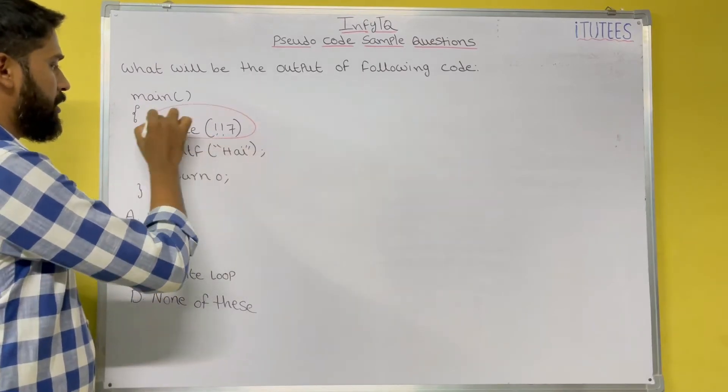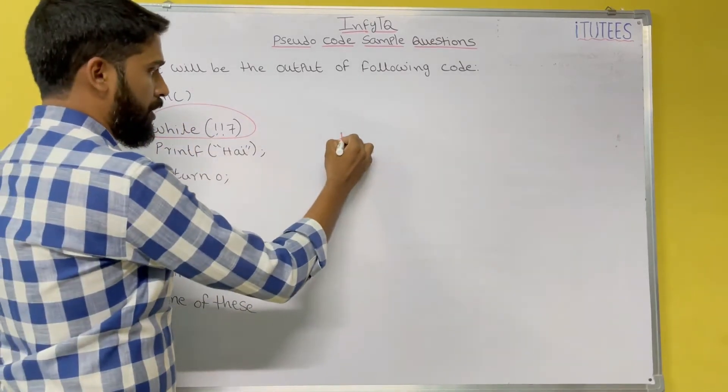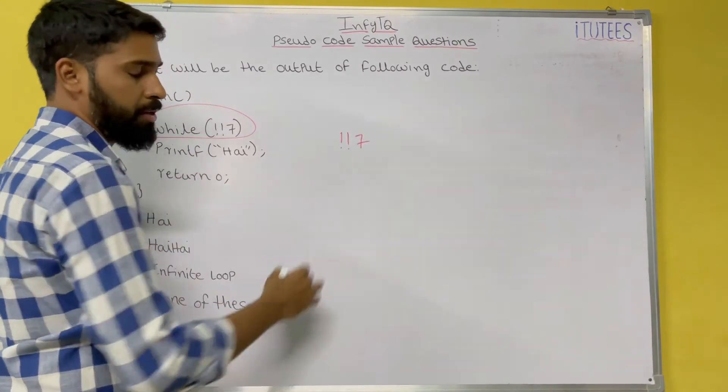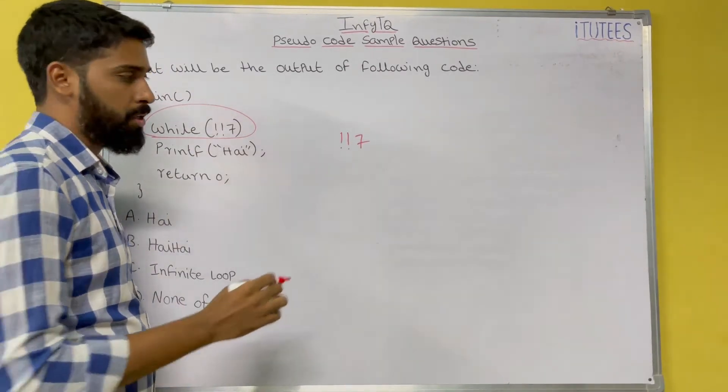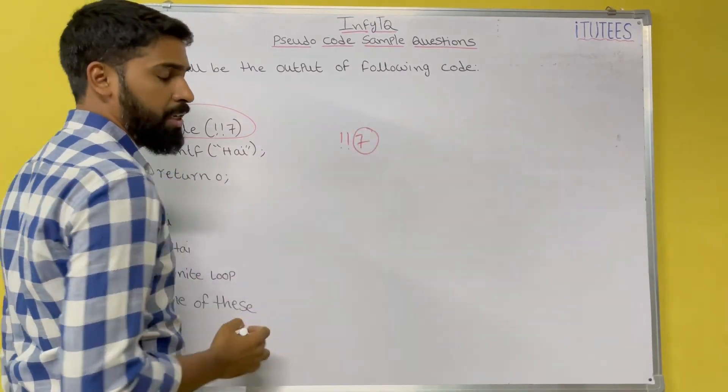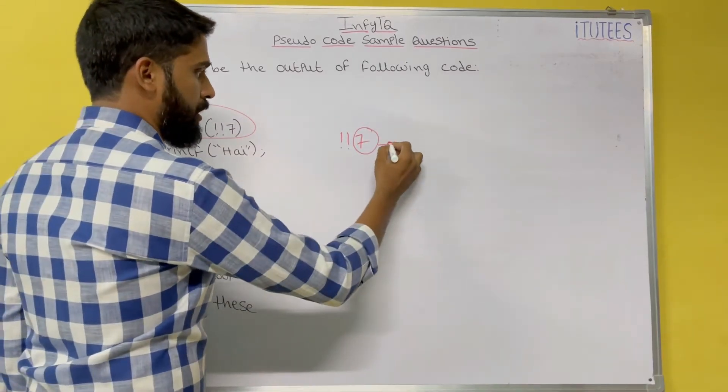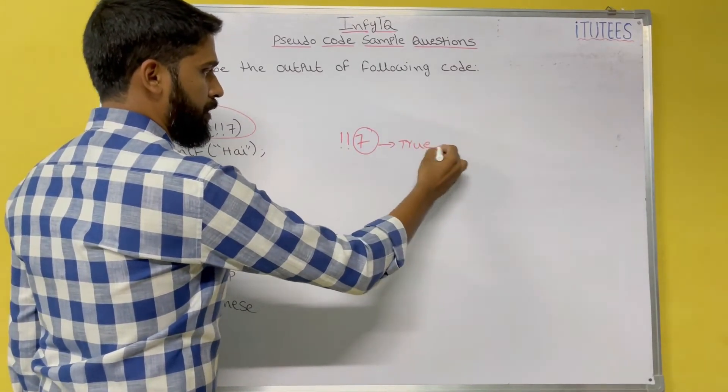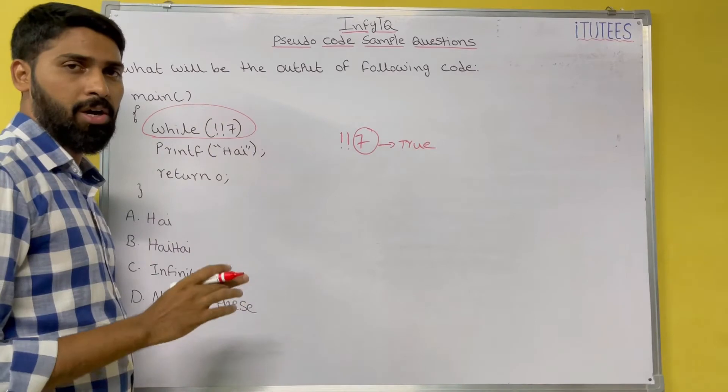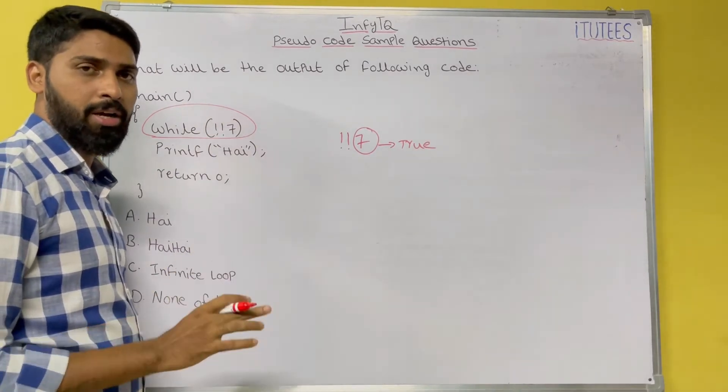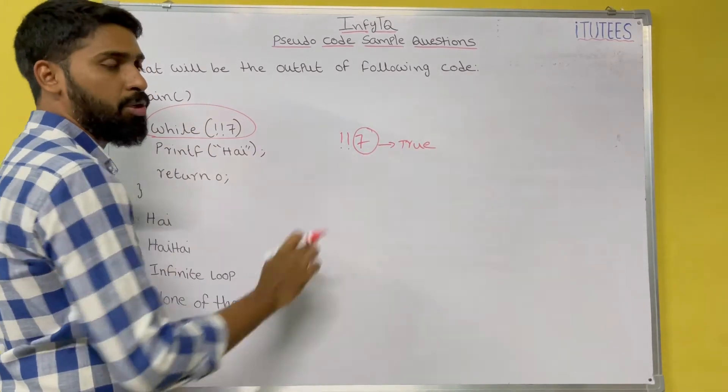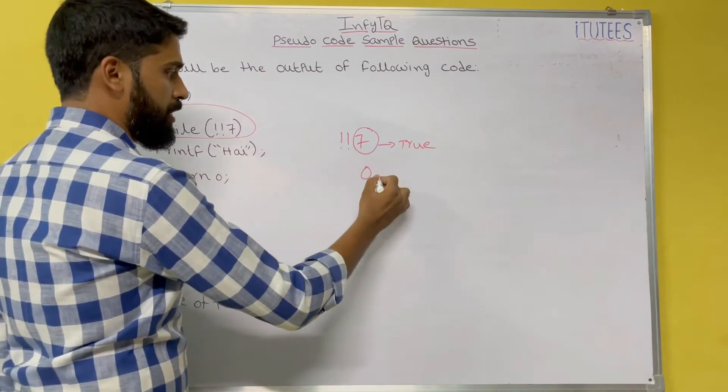This is the while statement: while not not seven. What does seven mean? It means true. In C language, all the positive and negative numbers represent true, and zero represents false.